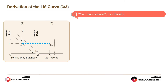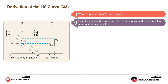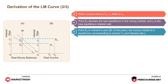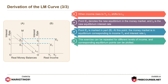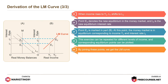When income rises to Y2, L1 shifts to L2. Point E2 denotes the new equilibrium in the money market and I2 is the new equilibrium interest rate. Point E2 is marked in part B, where the money market is in equilibrium corresponding to income Y2 and interest rate I2. This exercise can be repeated for different levels of income and corresponding equilibrium points can be plotted. By joining these points, we get the LM curve.